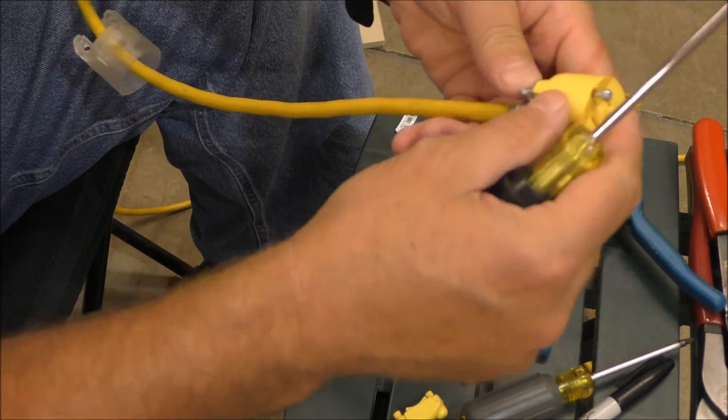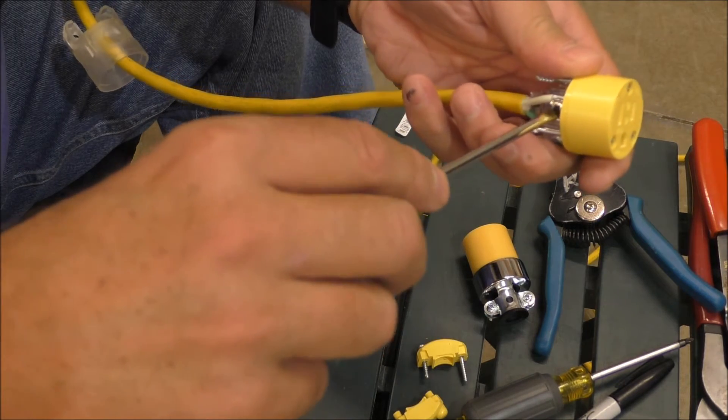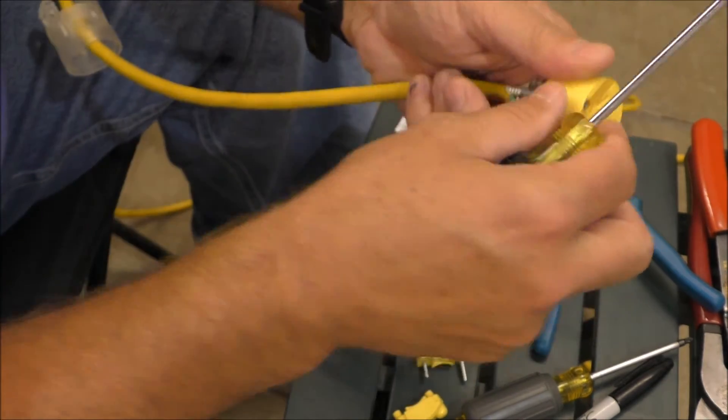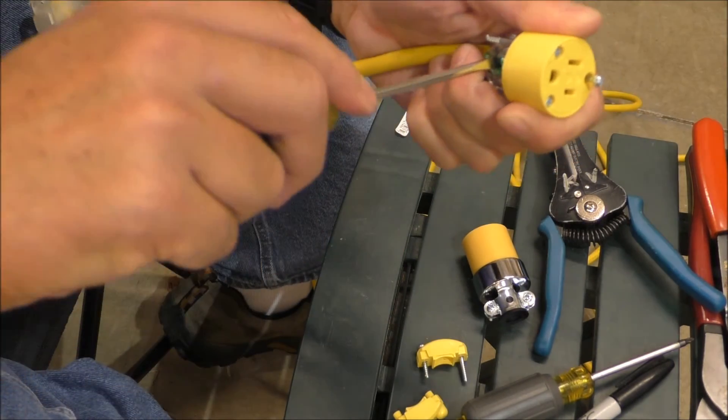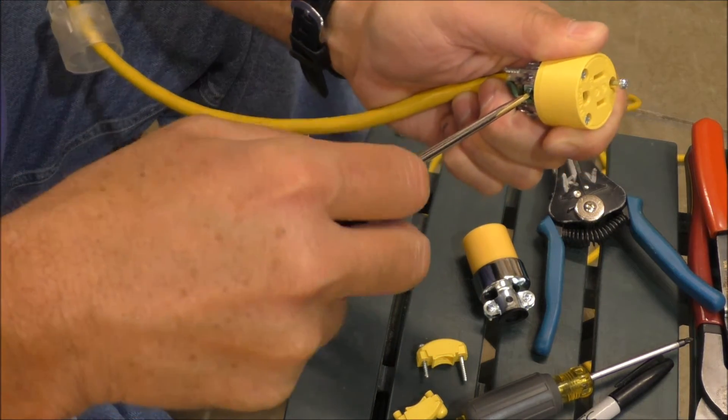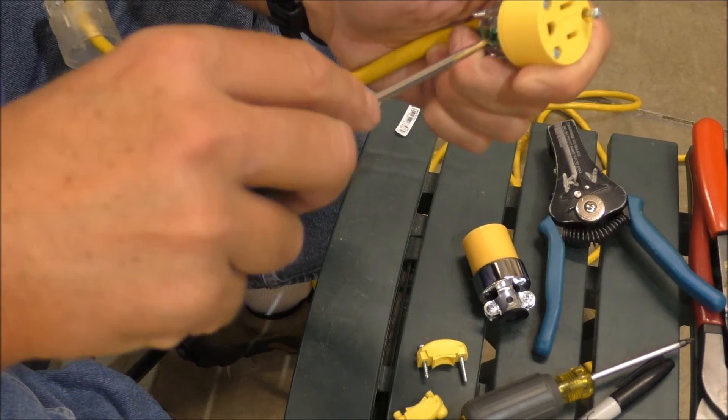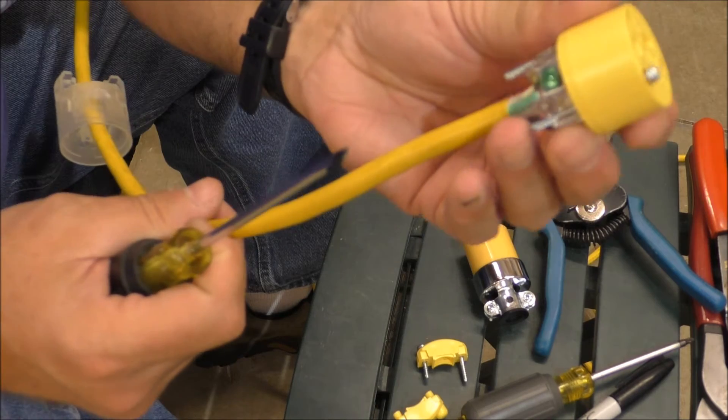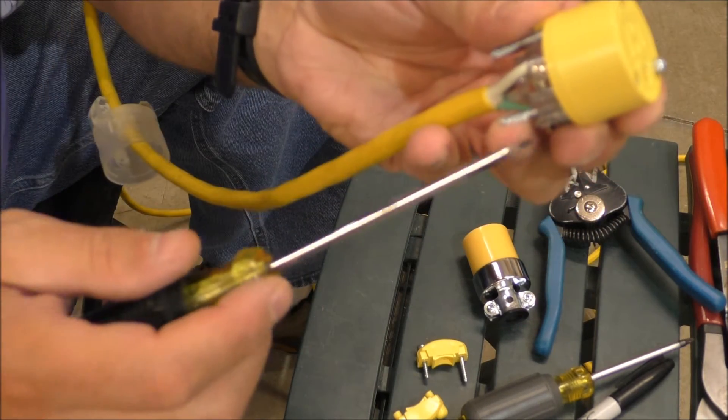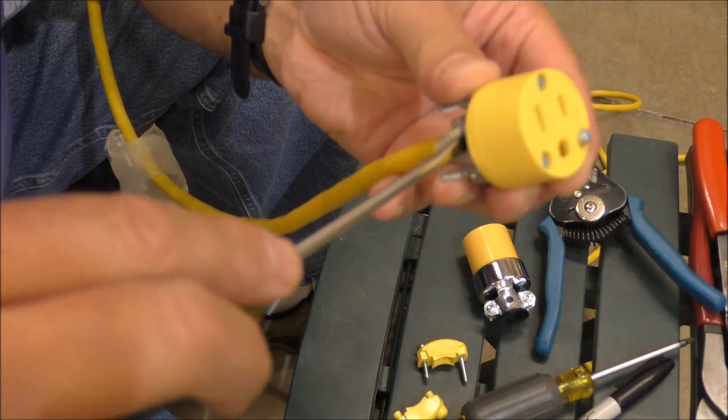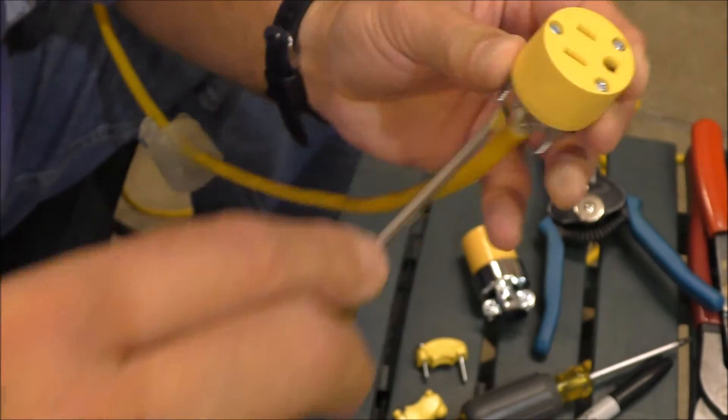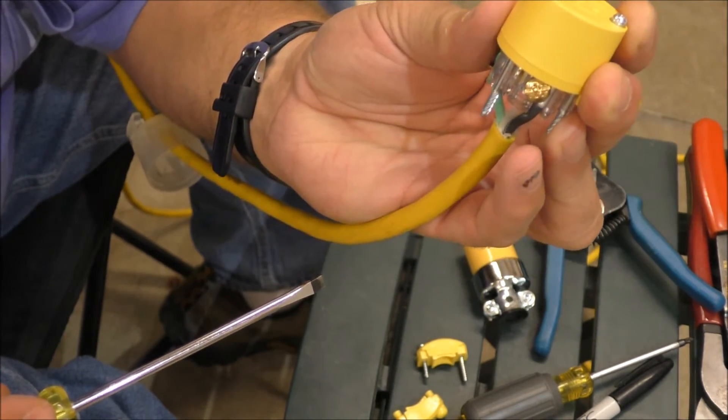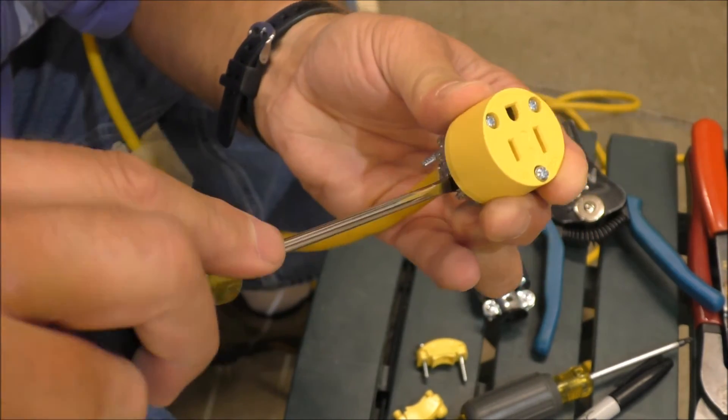That's our hot, that's good and snug. We'll go to our neutral. That's nice and snug. We'll go to our ground. We'll double check them. Ground right there, here's our ground, that's our neutral wire. Check that again, it's good. And our hot right here, see the difference color in that plug right there.